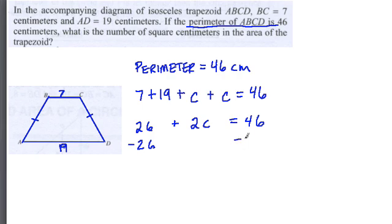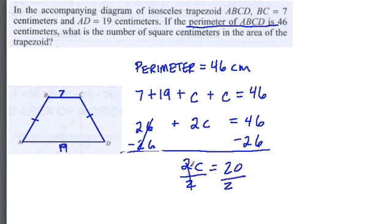So I subtract 26 from both sides, this is 0, and 2C is equal to 20. Divide both sides by 2, cancels out here, and C equals 10. So the 2 unknown side lengths are 10, and 10, 20, 39, plus 7 is 46 centimeters. That is the perimeter, and that worked.